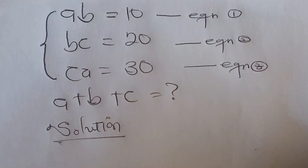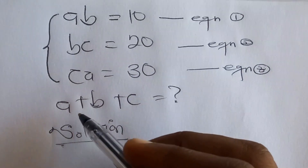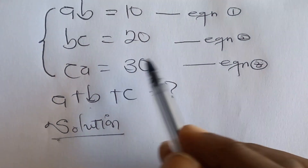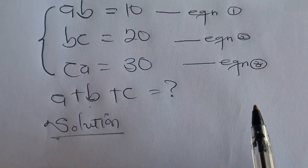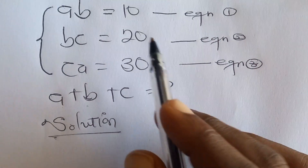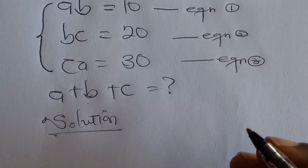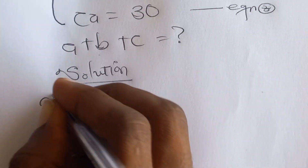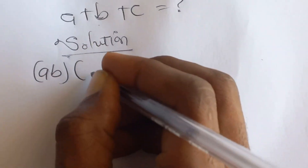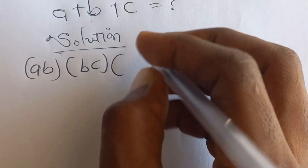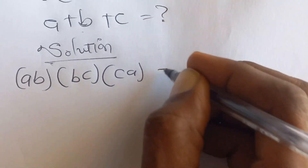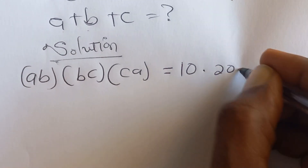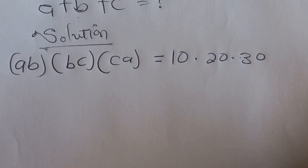We are looking at this system of equations and we have to find a plus b plus c. To solve this, we multiply all three equations together, giving us ab multiplied by bc multiplied by ca, which equals 10 multiplied by 20 multiplied by 30.